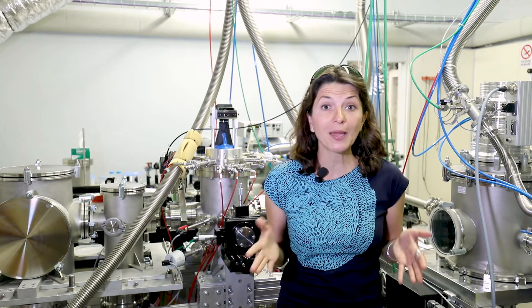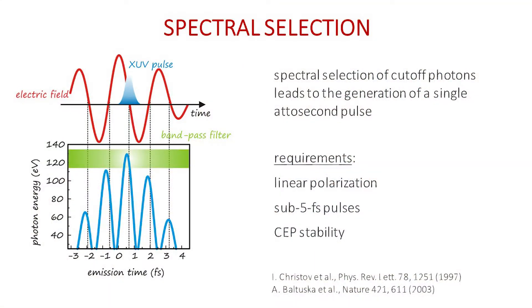A first approach is the spectral selection of harmonic emission. When the harmonics are generated by very short pulses, in the order of a few femtoseconds, the XUV radiation with the highest photon energy is generated only during the most intense half-cycle of the driving beam.